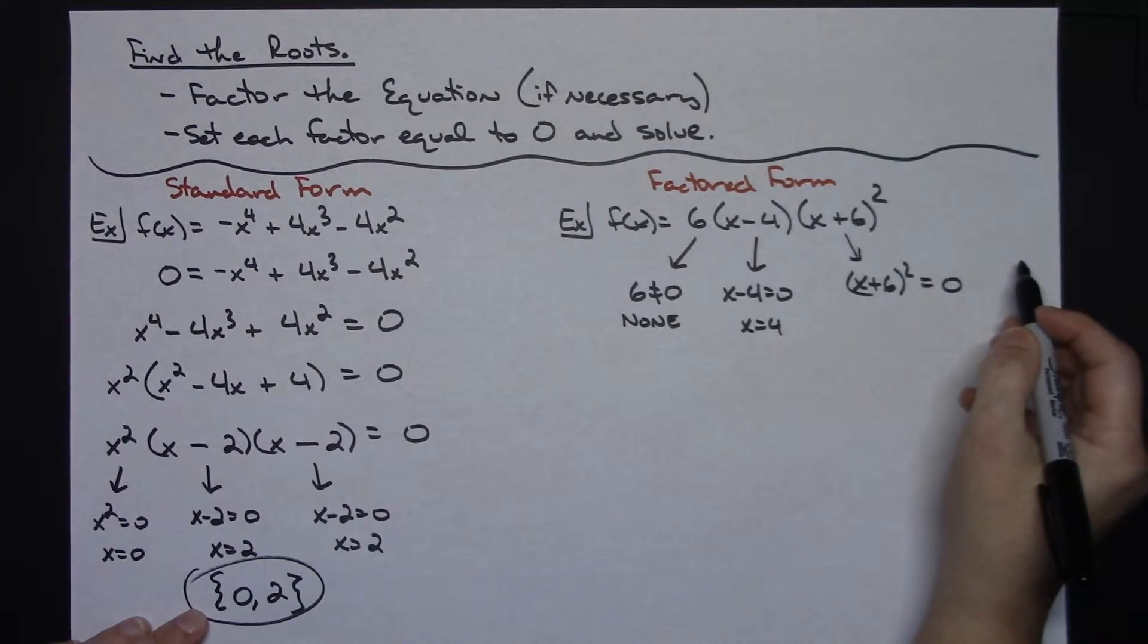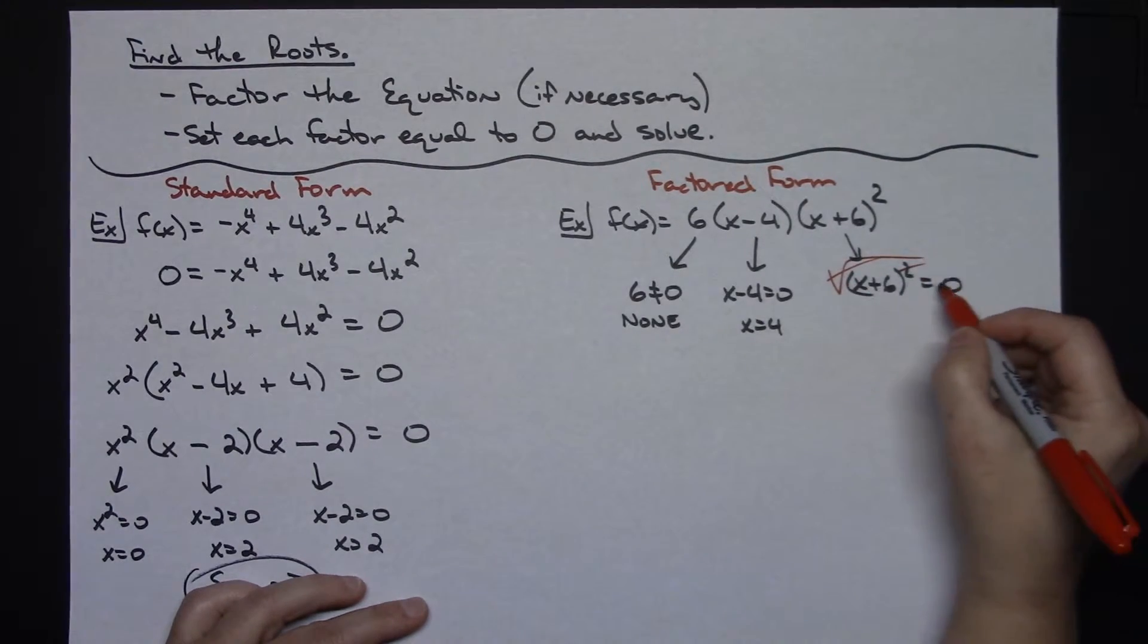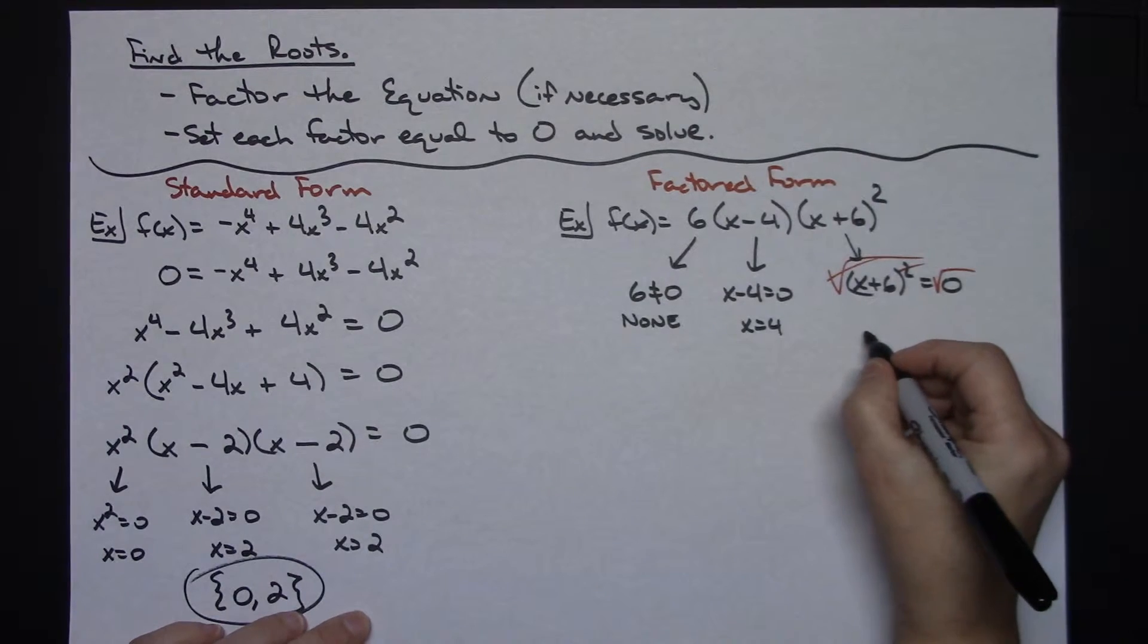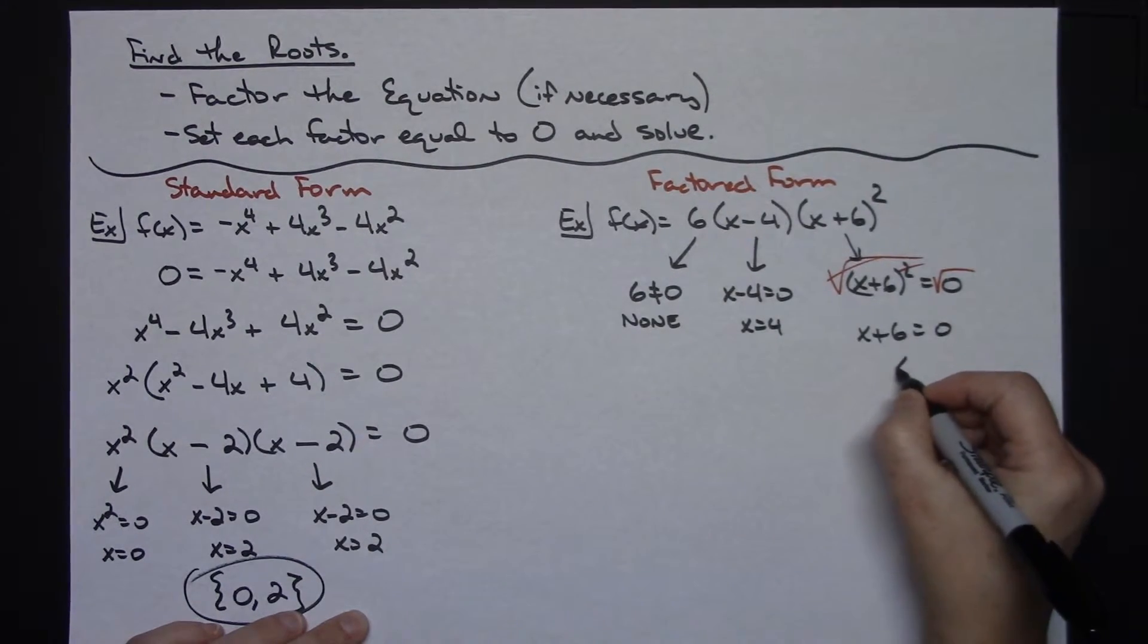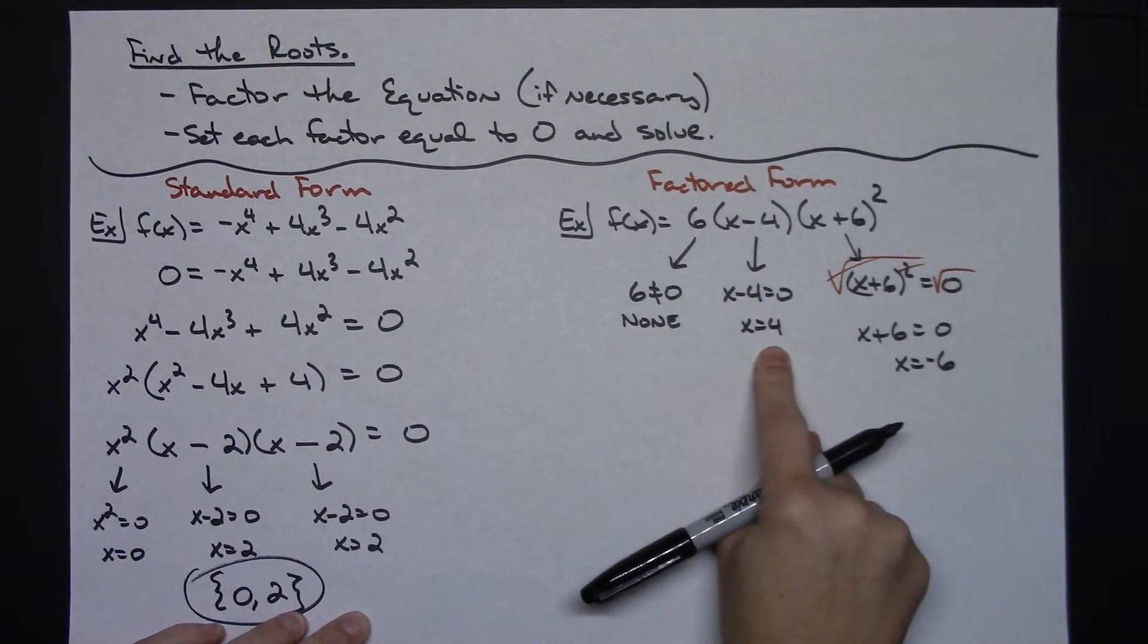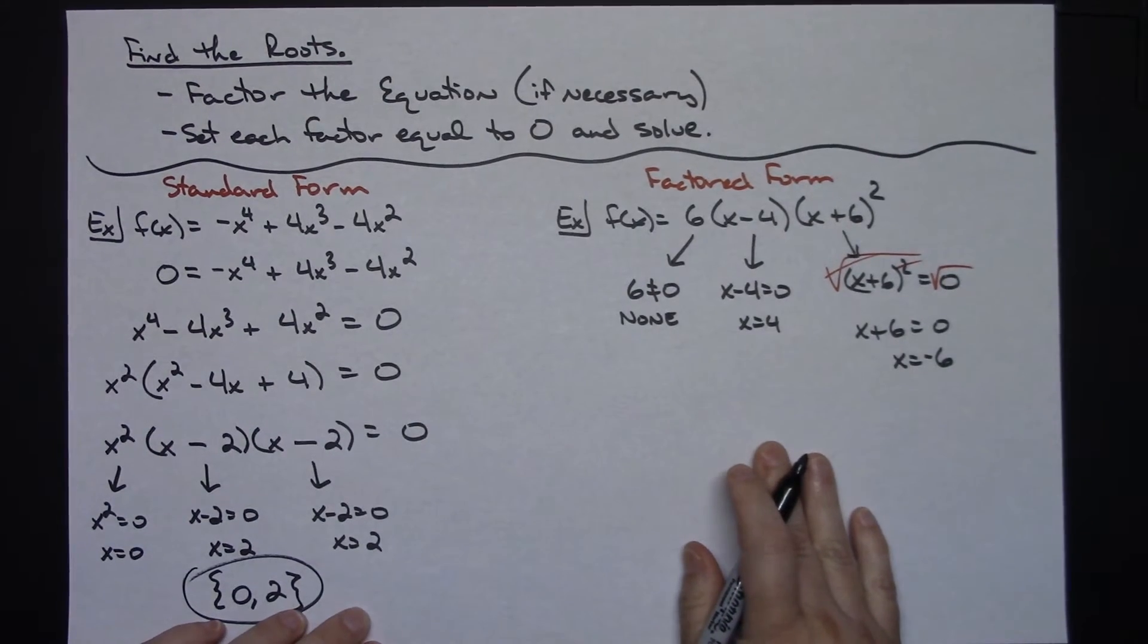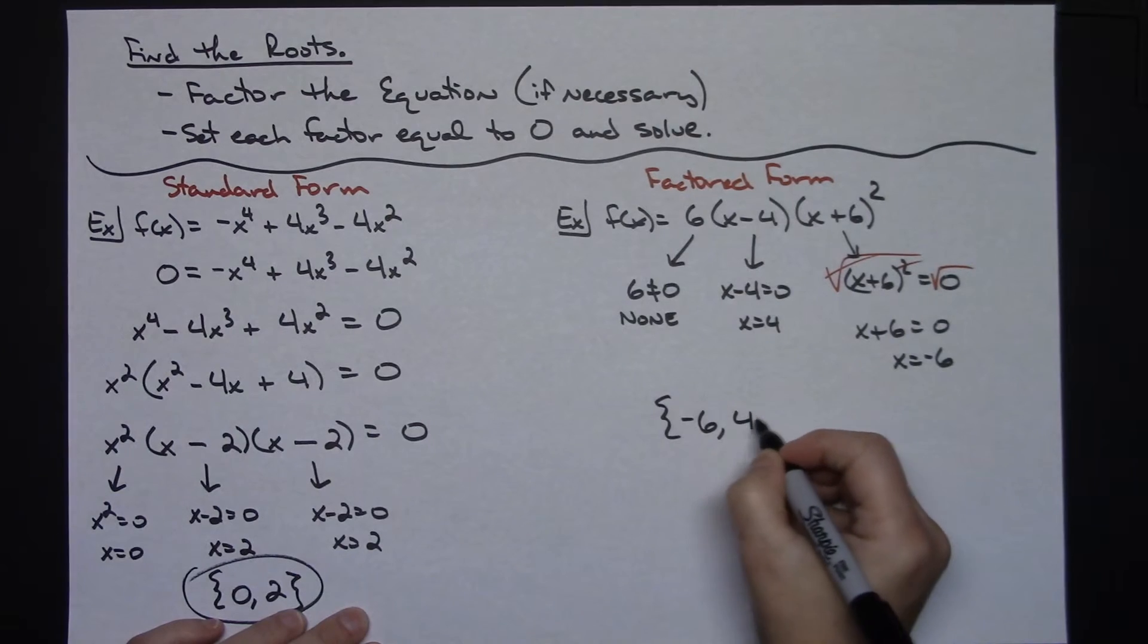Now if I do this one, set it equal to 0, x plus 6 quantity squared set equal to 0. I'm going to take square root of both sides. So when I take square root of both sides, then the square root and the 2 goes away on this side. Square root of 0 is 0, so x plus 6 equals 0. Now I can subtract 6 from both sides, x equals negative 6. So I did not get a root here but I did get a root here and here.